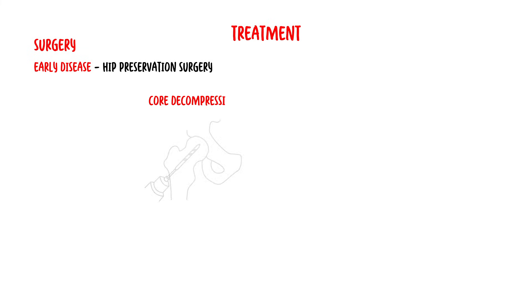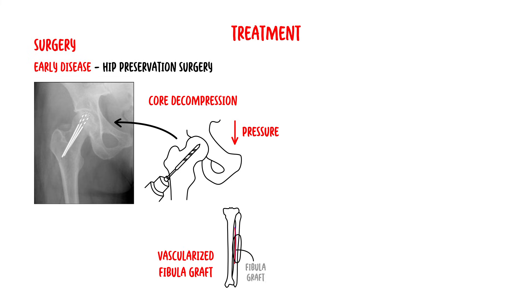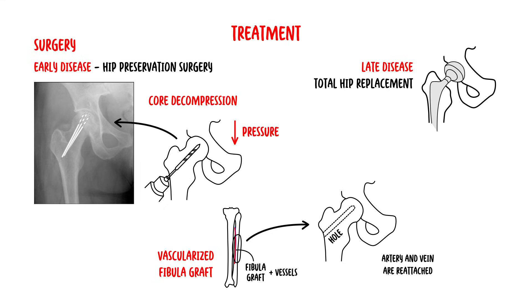The definitive treatment is surgery. In early disease, hip preservation surgery is used, including core decompression, where one large hole or several smaller holes are drilled into the femoral head to relieve pressure and create channels for new blood vessels. There is also vascularized fibular graft surgery, where a segment of bone from the fibula along with its blood supply is transplanted into a hole created in the femoral neck and head, with the artery and vein reattached to help heal the osteonecrosis. In late disease, stages 3 and 4, a total hip replacement is required.